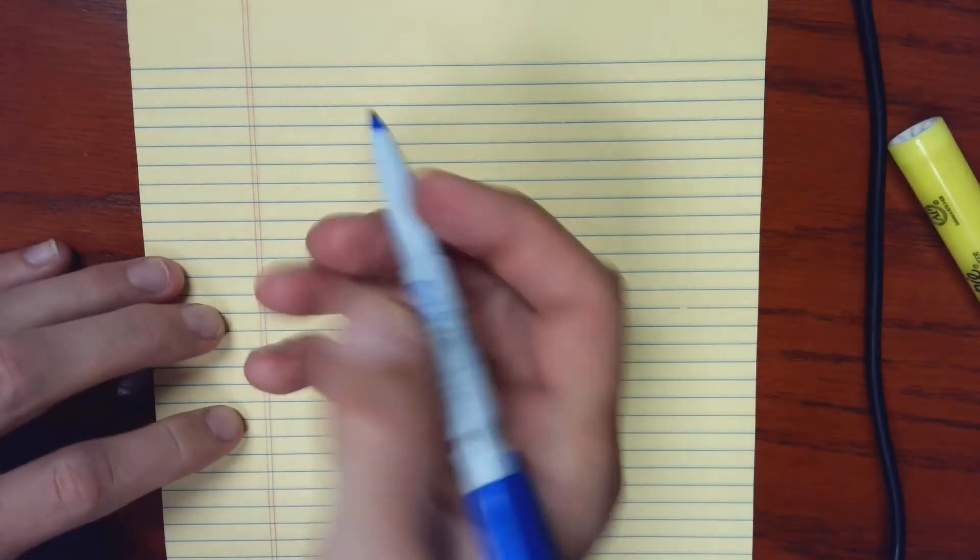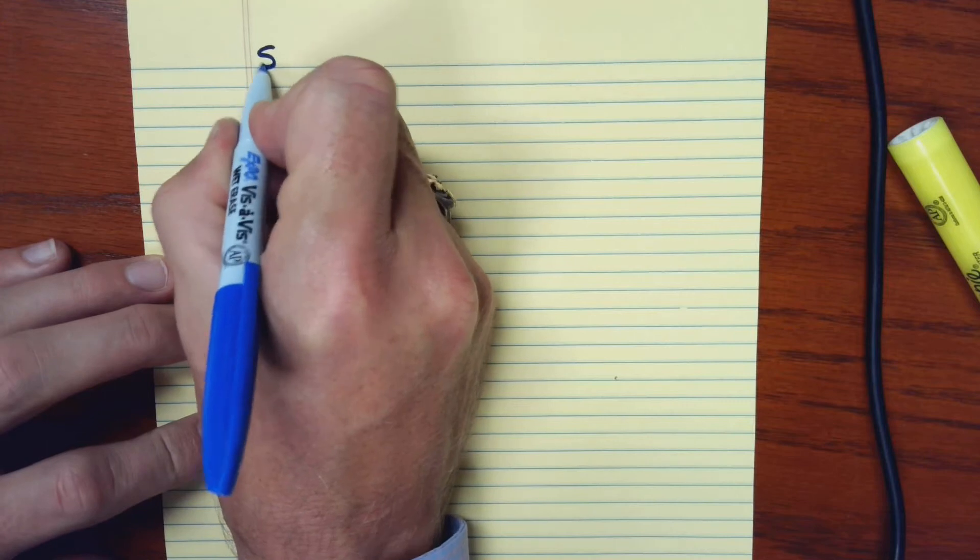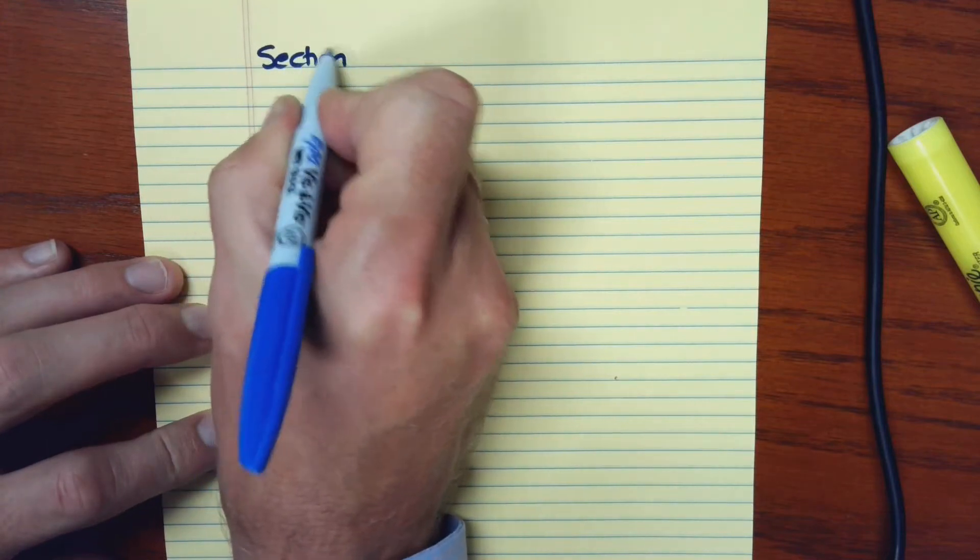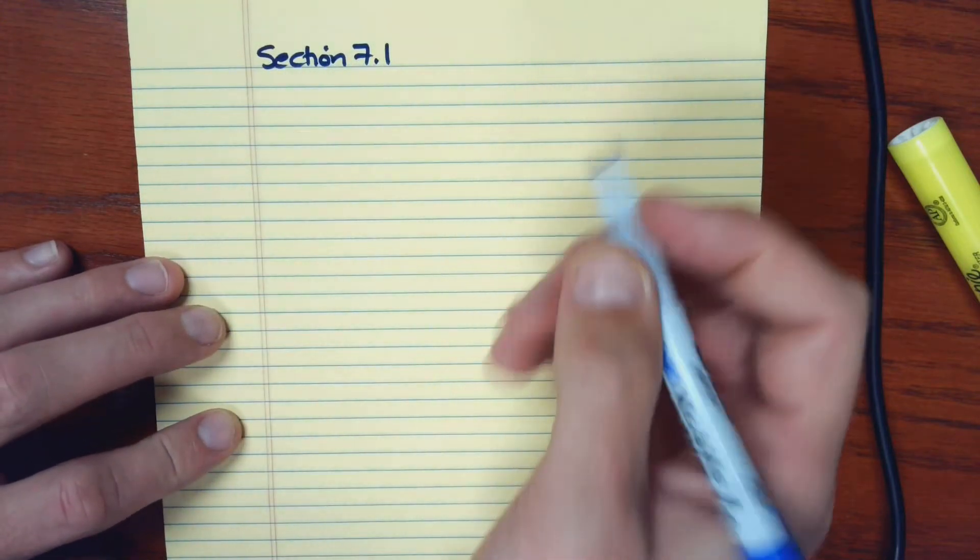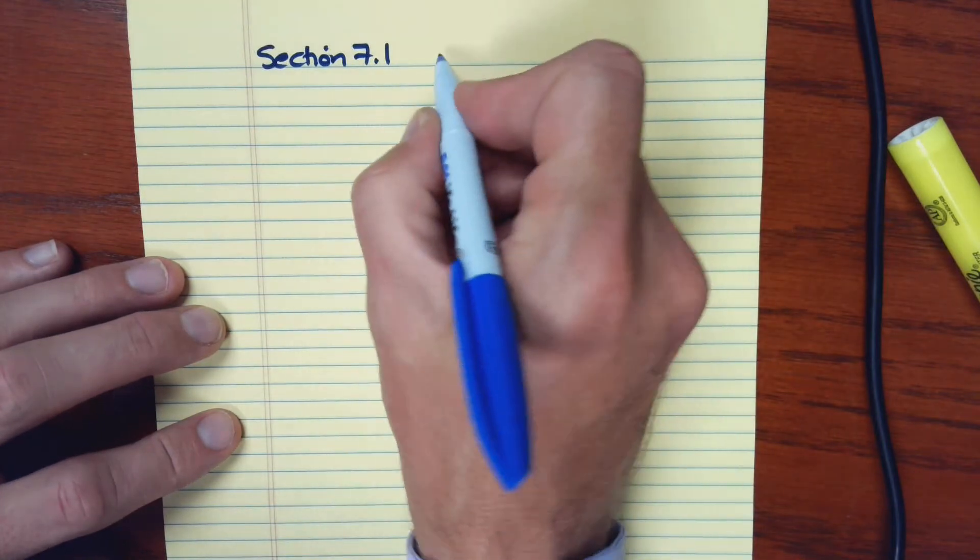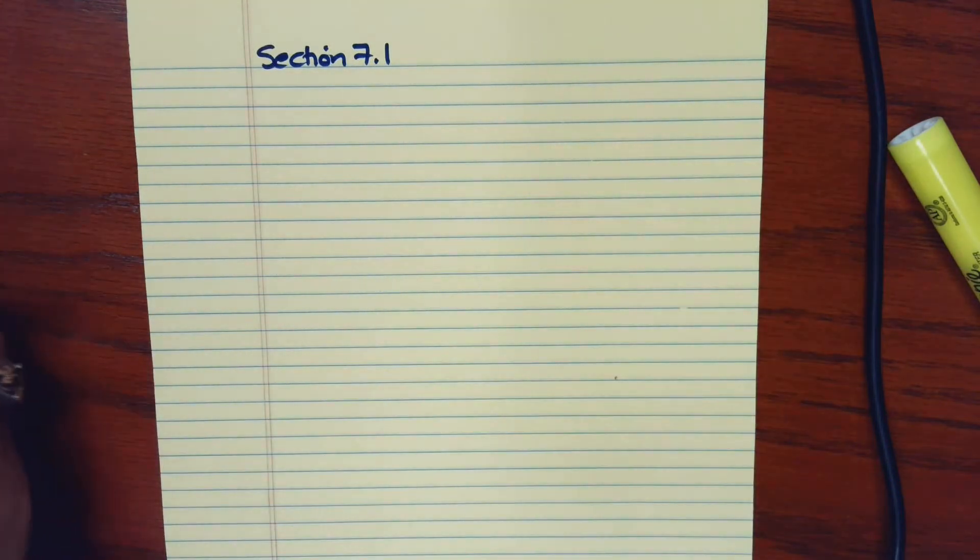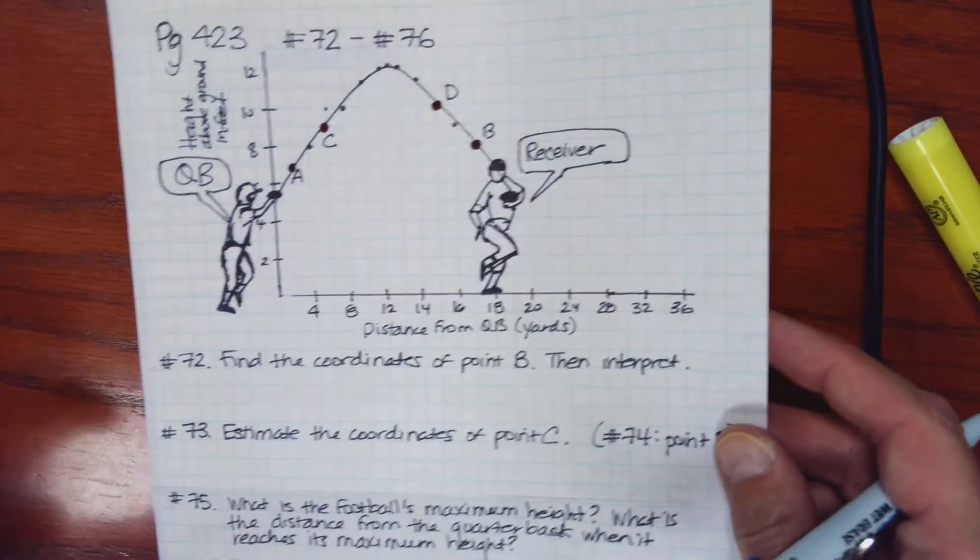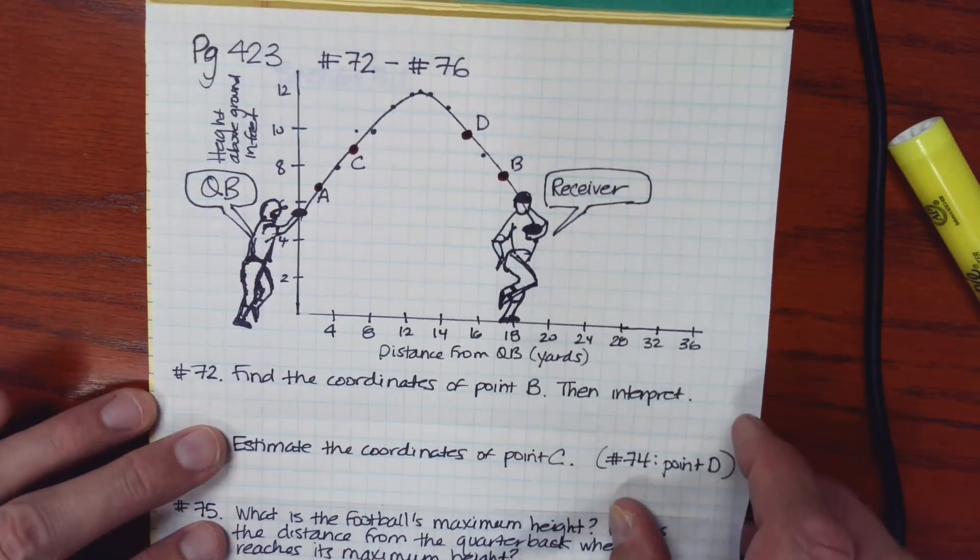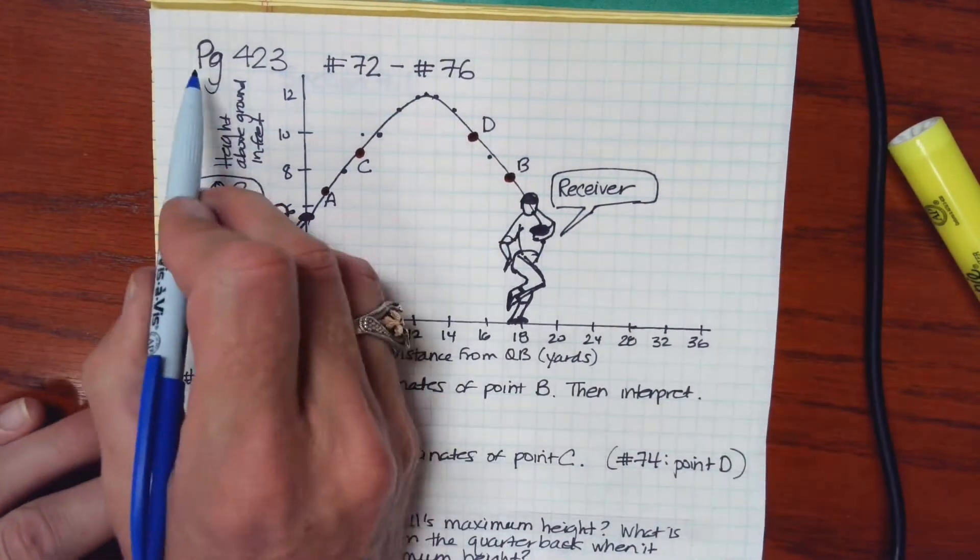Okay, so let's continue on with some examples. Again, we're working in section 7.1, graphing functions. So I'm going to show you this brilliant drawing that I did. This is taken from your textbook on page 423.